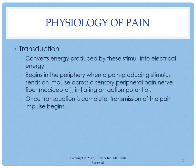There are four physiological processes of normal pain: transduction, transmission, perception, and modulation. Transduction begins in the periphery when a pain-producing stimulus — such as exposure to pressure or a hot surface — sends an impulse across a sensory peripheral nerve pain fiber, initiating an action potential. Once transduction is complete, transmission of the pain impulse begins.